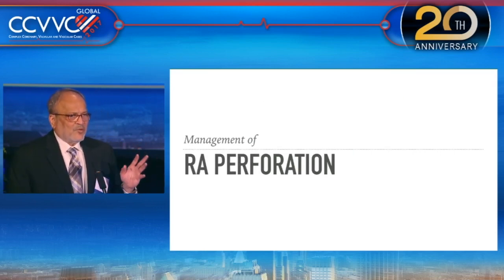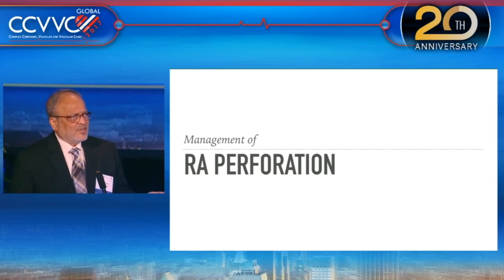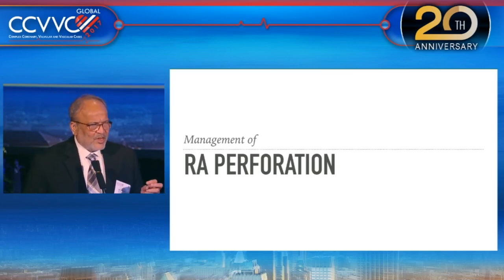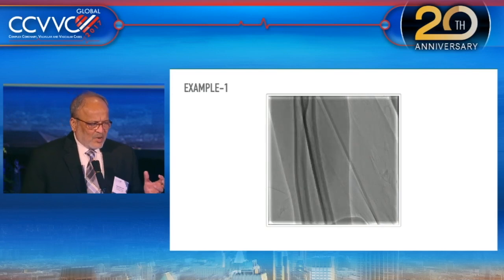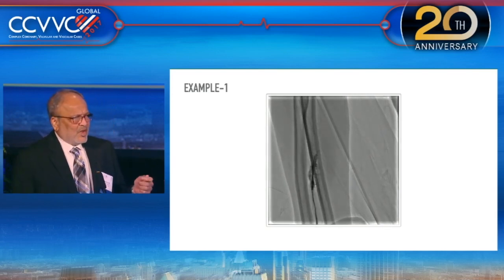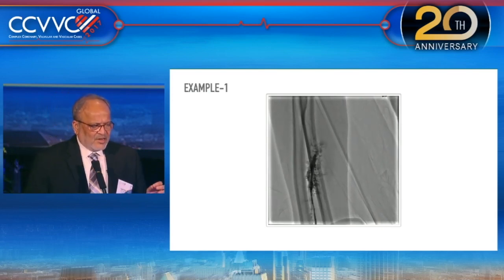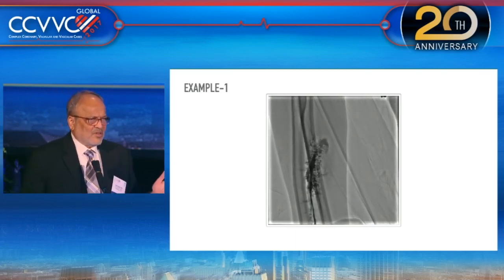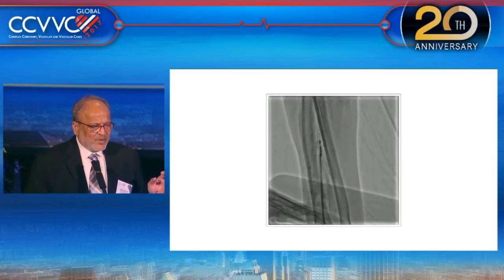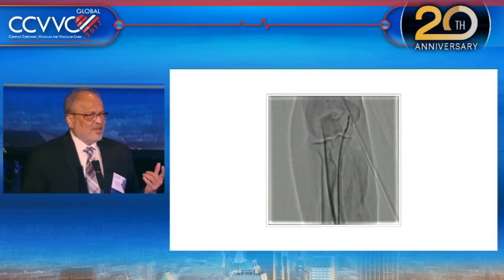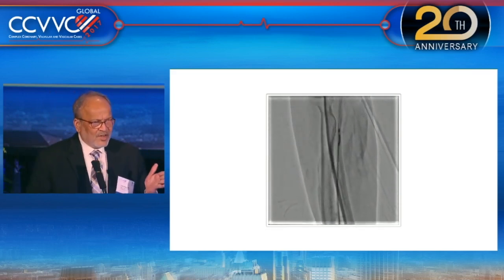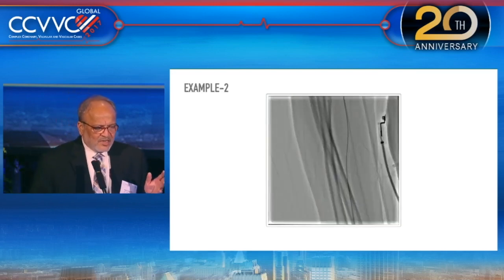Perforation: how do you suspect perforation? Whenever a patient complains of pain or discomfort in the forearm or arm, you have to inject and see — there can be an expanding hematoma or a perforation going intramural. This is an example of an expanding hematoma and severe pain while pushing the wire. If you are a beginner, stop at this stage, do hemostasis, and defer the procedure for several hours. If you are experienced, slowly negotiate the PTCA wire across the perforation, use balloon-assisted tracking, complete the procedure — the catheter will act as an internal hemostatic device and will tamponade the perforation.